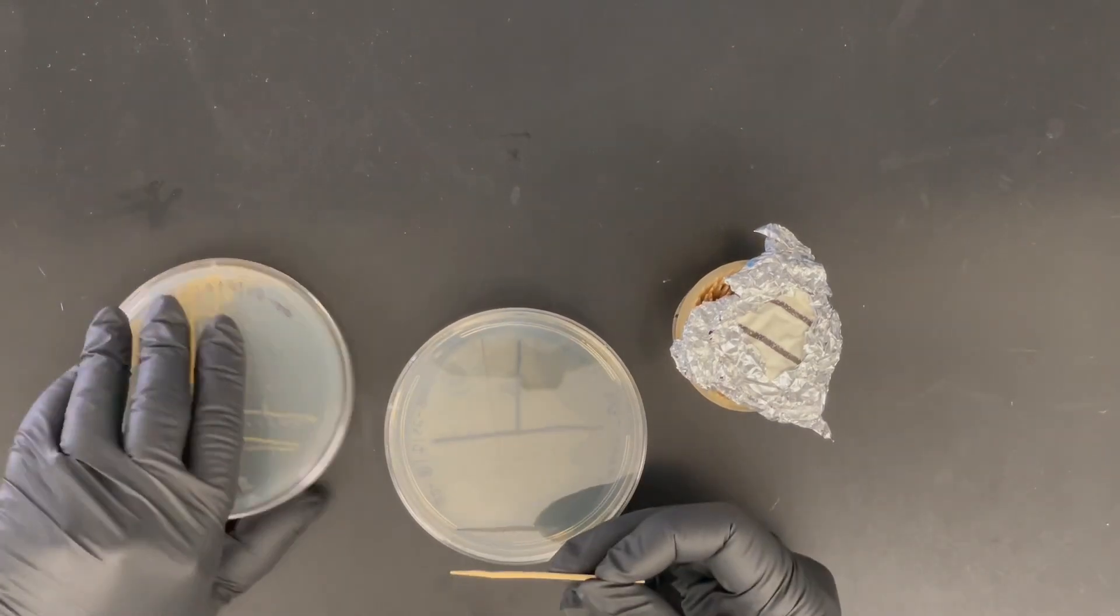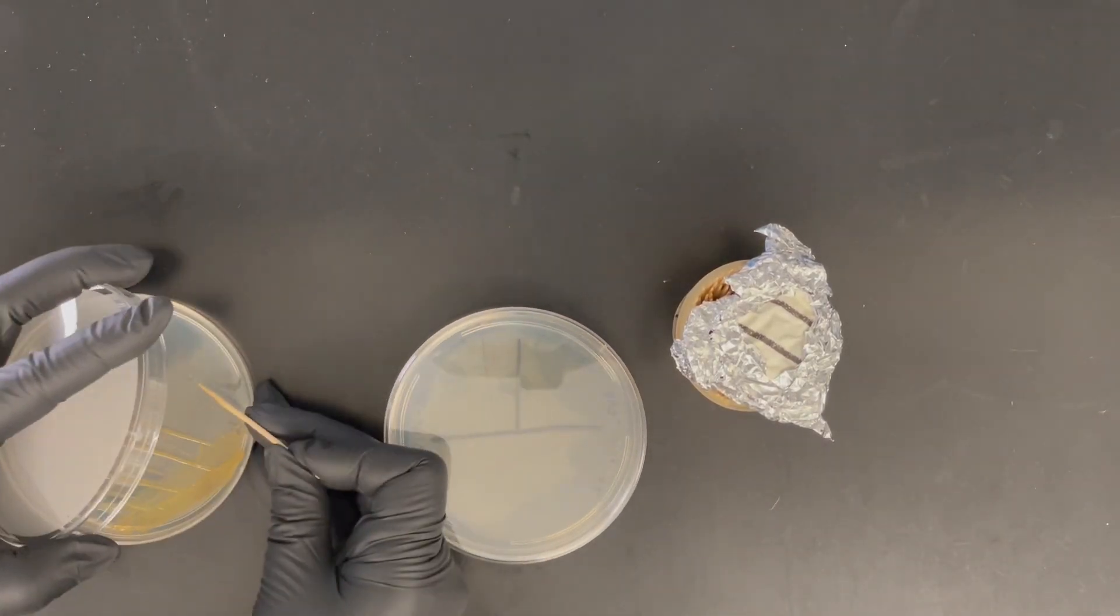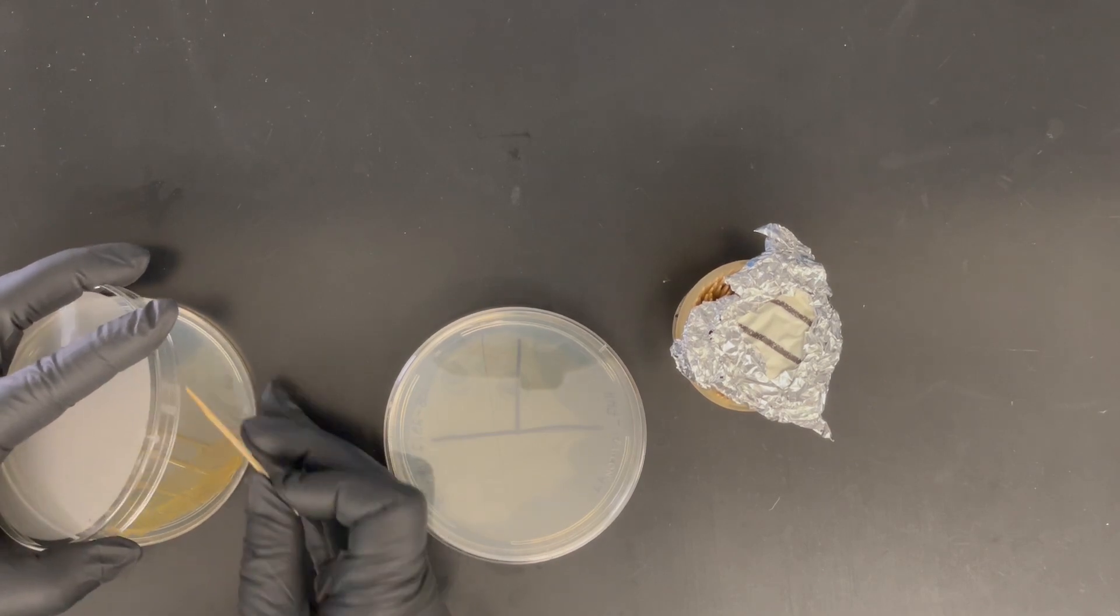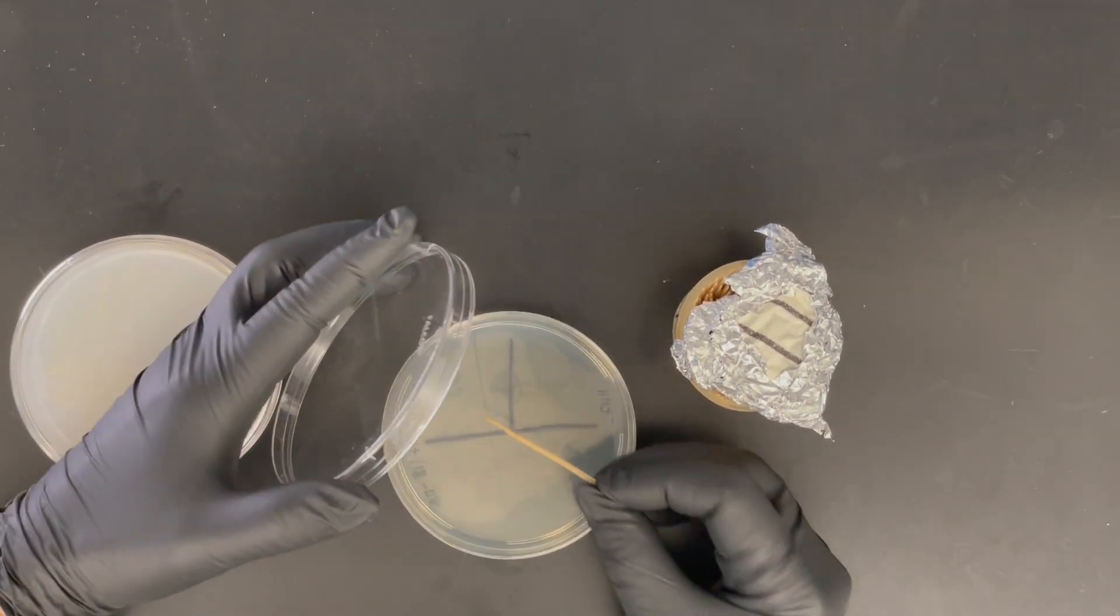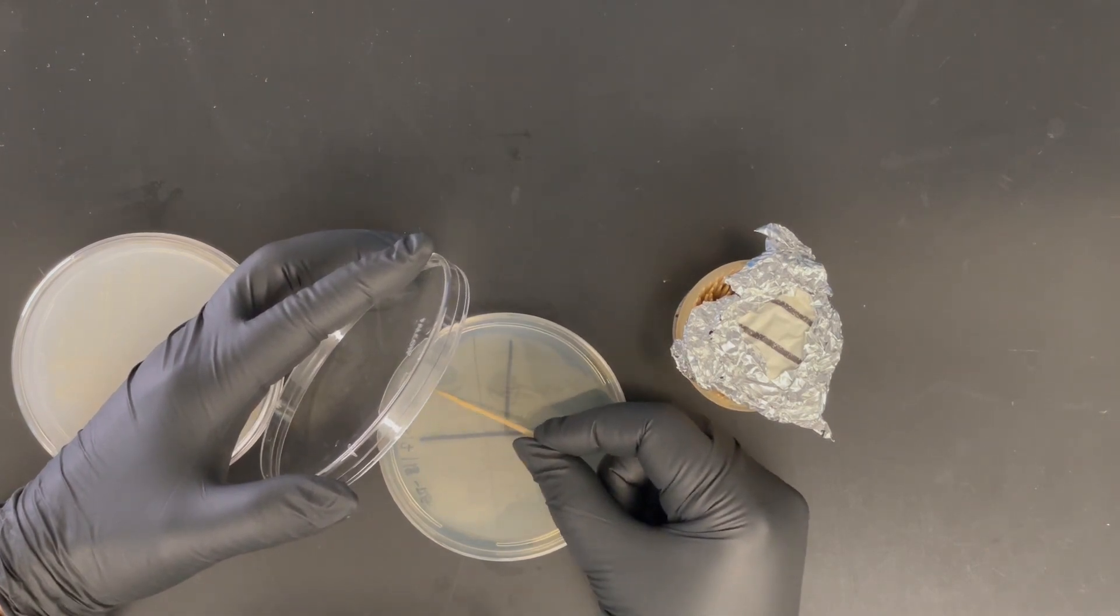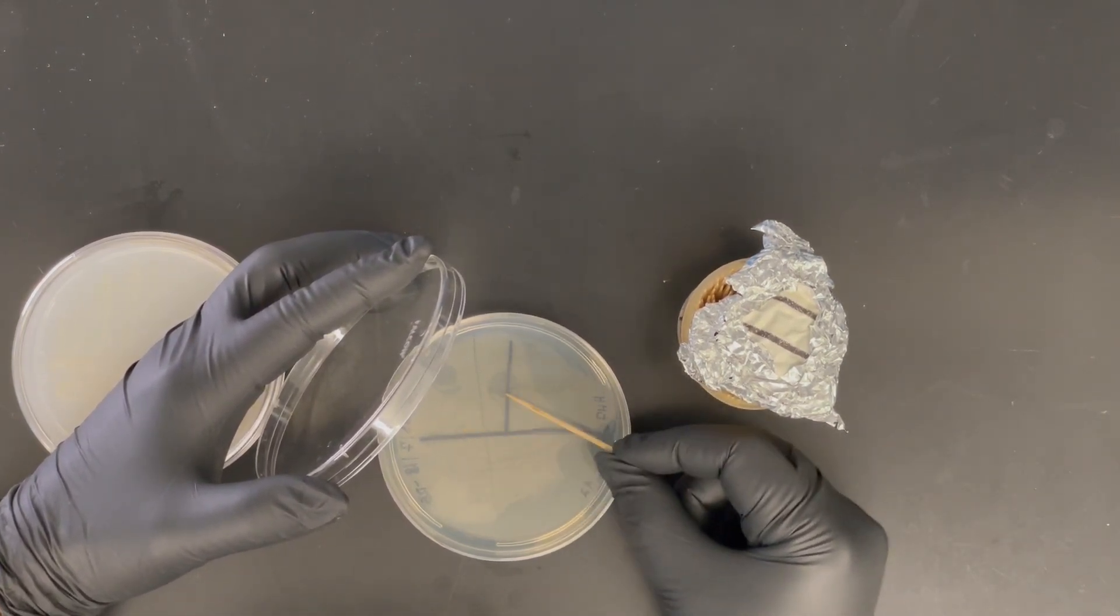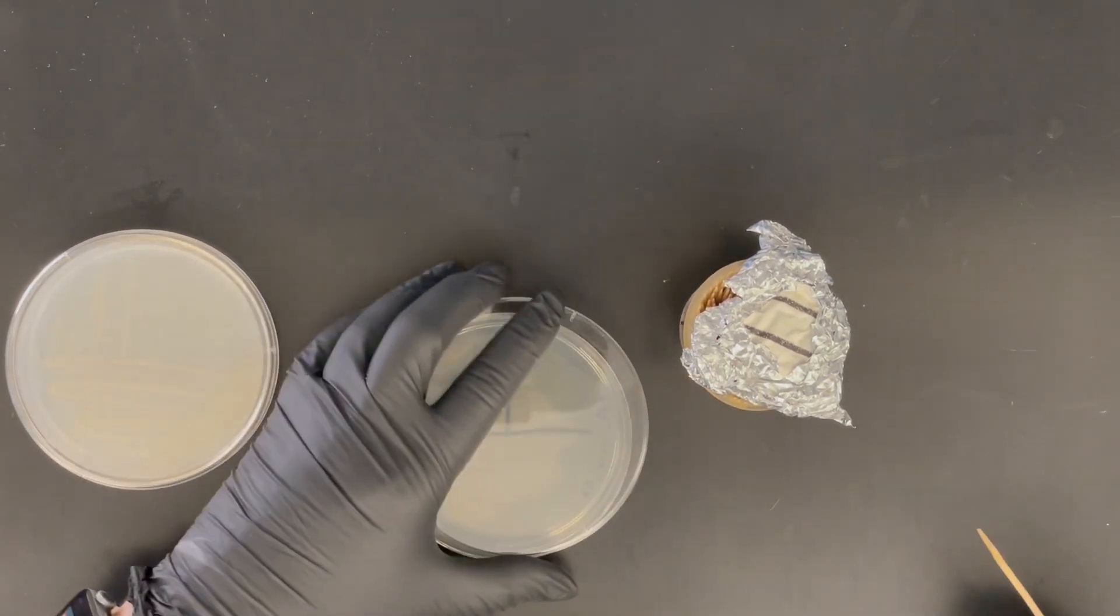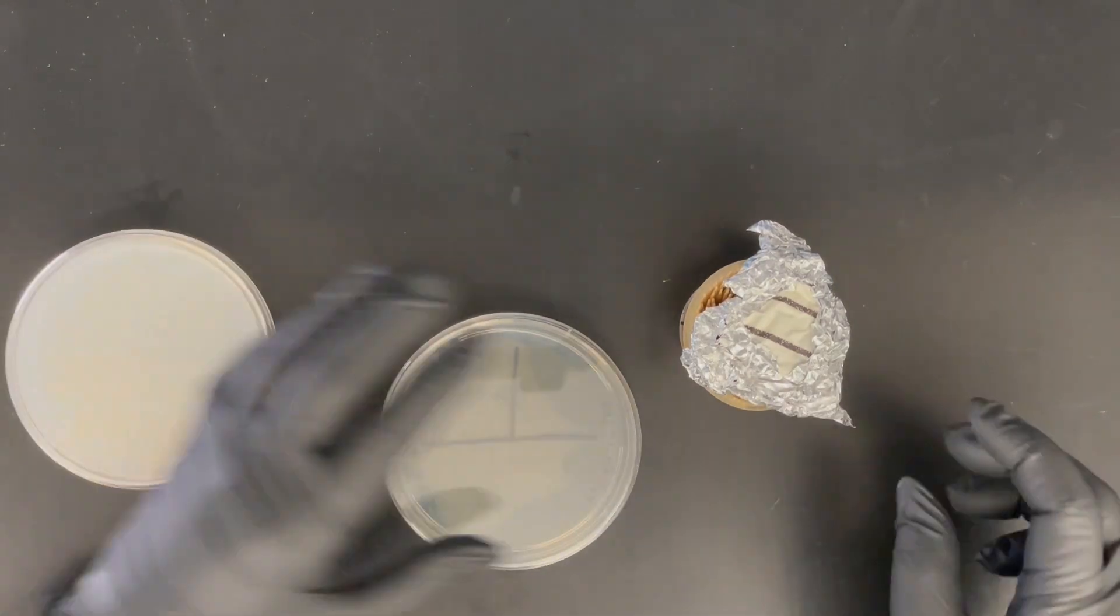I'm going to pick the colony that I'm choosing off of the first streak. I'm just going to dab in there. You don't have to go crazy. And then you're going to go back and forth. I find that the toothpicks kind of gouge the agar and it's not as nice as using the inoculating loop. But what is nice about the toothpicks is you can work faster.